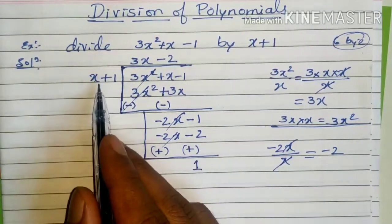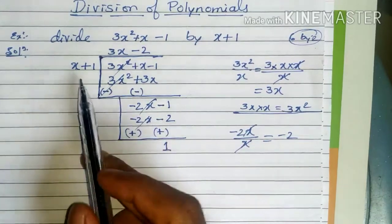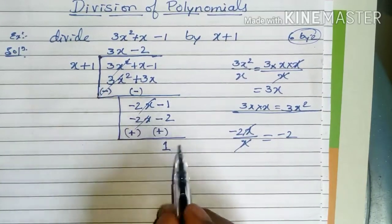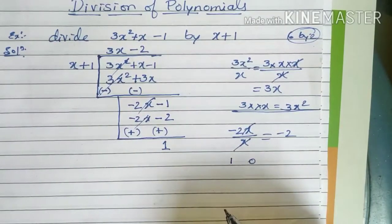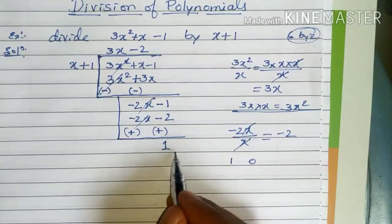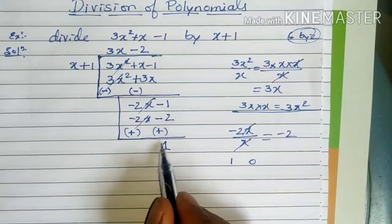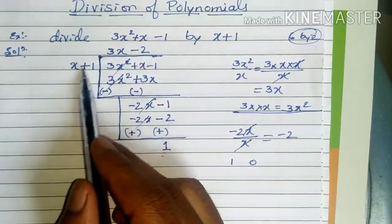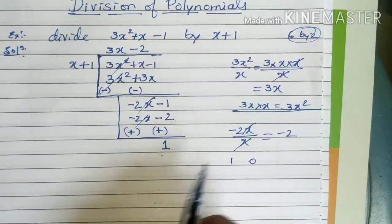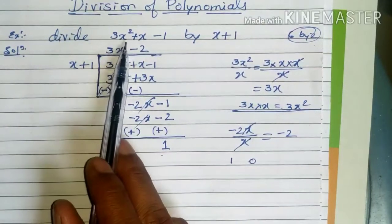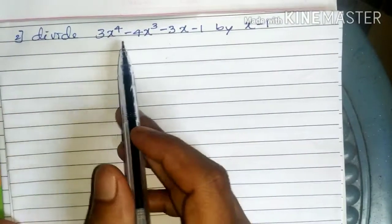The remainder is 1 and the divisor is x + 1, which has degree 1. The remainder has degree 0, which is less than the degree of the divisor, so division ends. The quotient is 3x - 2 and the remainder is 1. This is how you divide one polynomial by another.